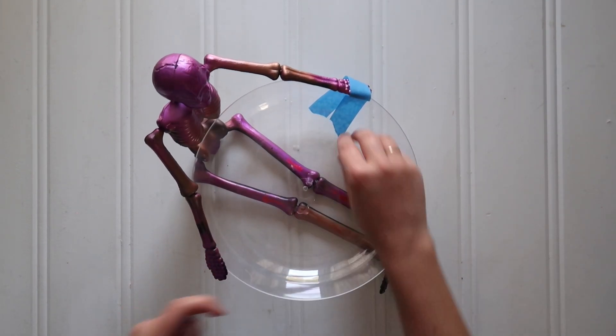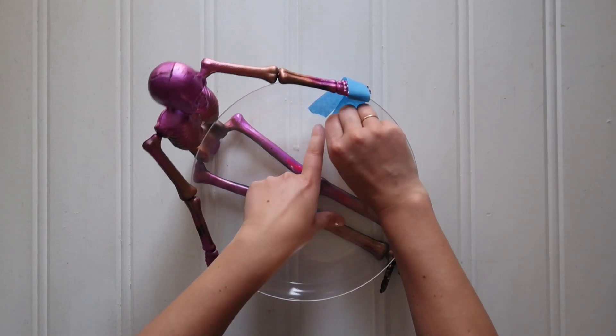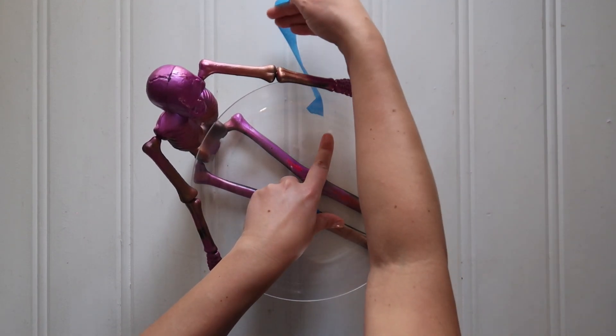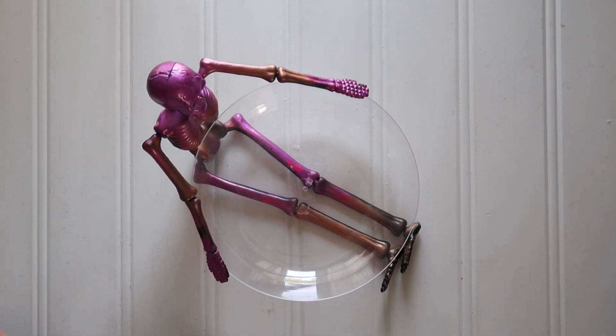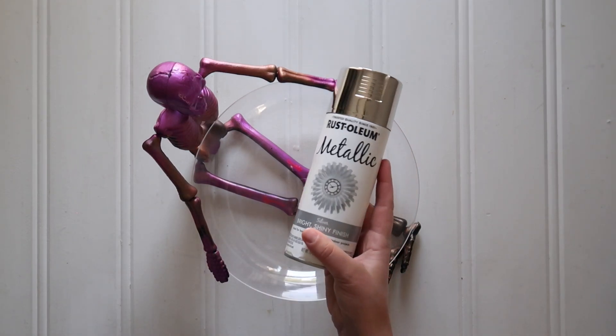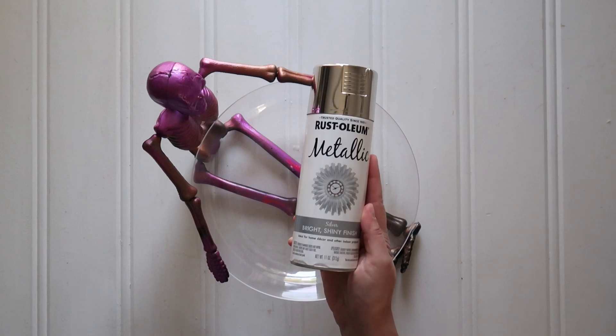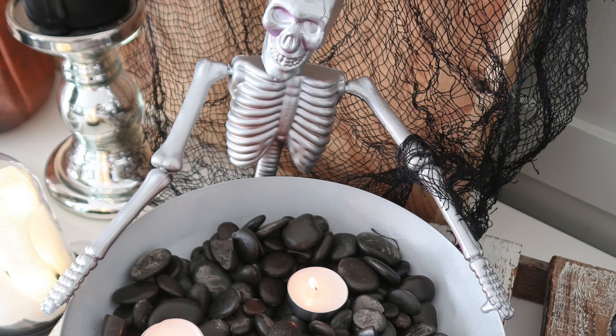And came back with some silver spray paint. Took everything outside, gave it a nice coat with this Rustoleum metallic spray paint in the color silver. And how cute did this guy turn out!